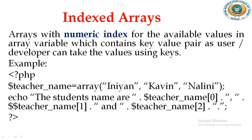For an indexed array, by default it is going to be referred with an index value. For example, teacher name set: in all computer programs it is going to be started with 0 - that is the subscript. So the first teacher is going to be identified as teacher_name[0], teacher_name[1], teacher_name[2]. So the 0, 1, 2 are the index positions - that is called indexed array.